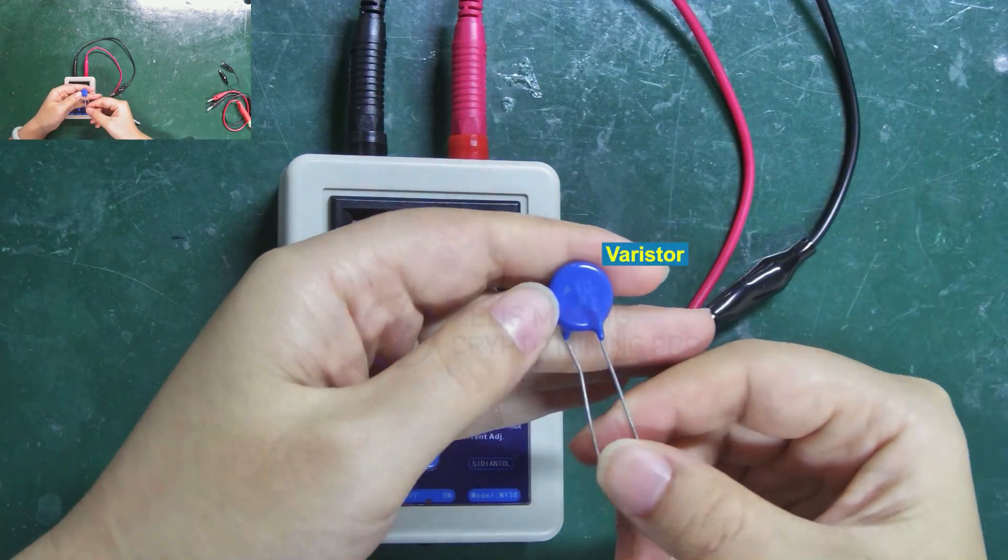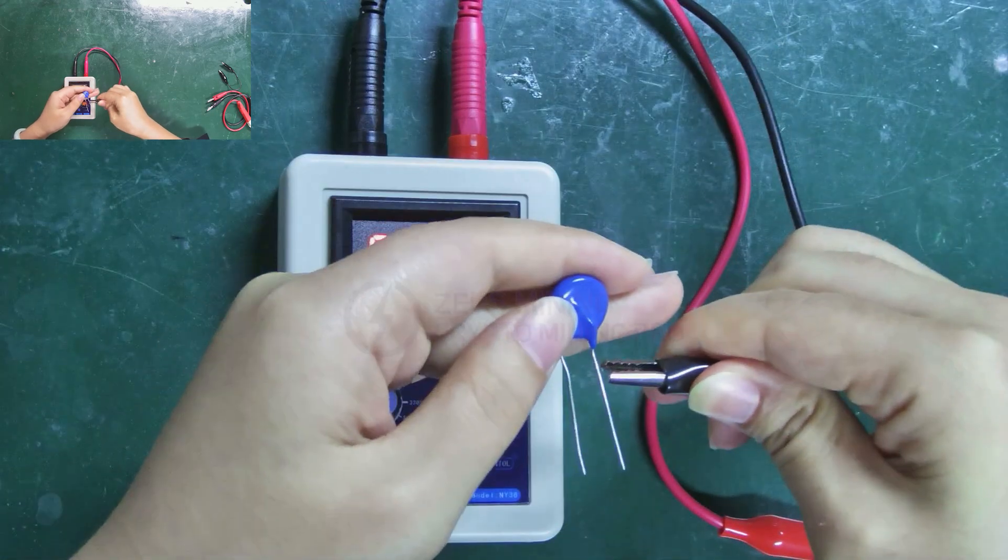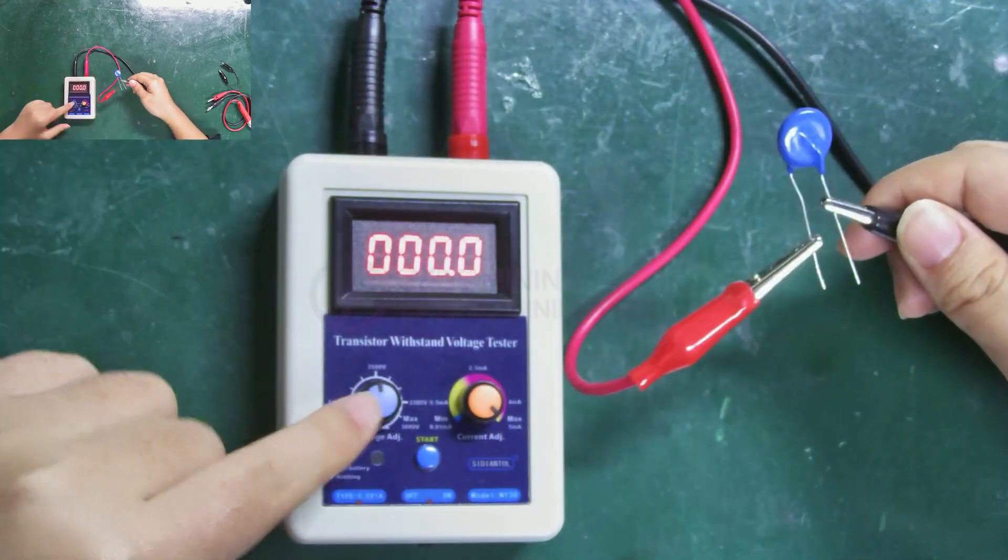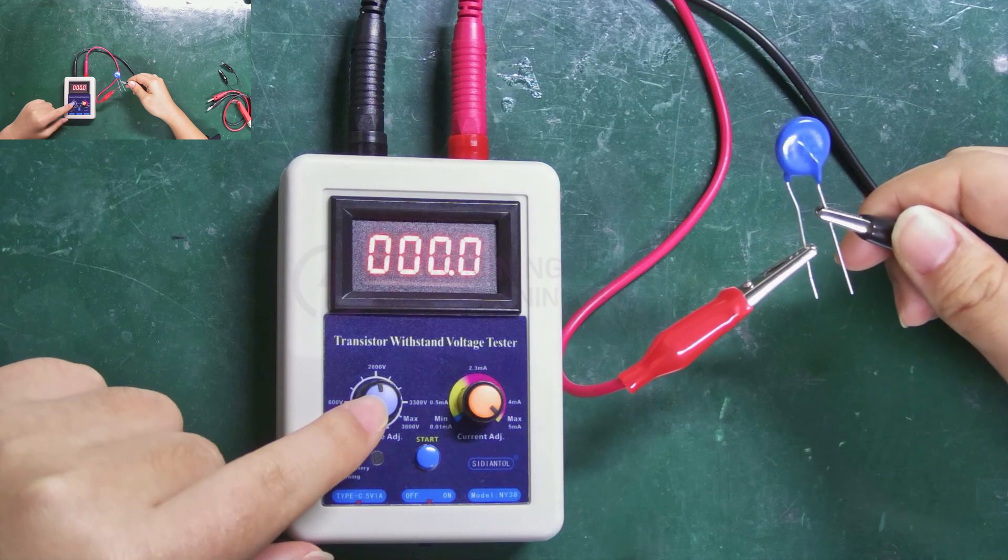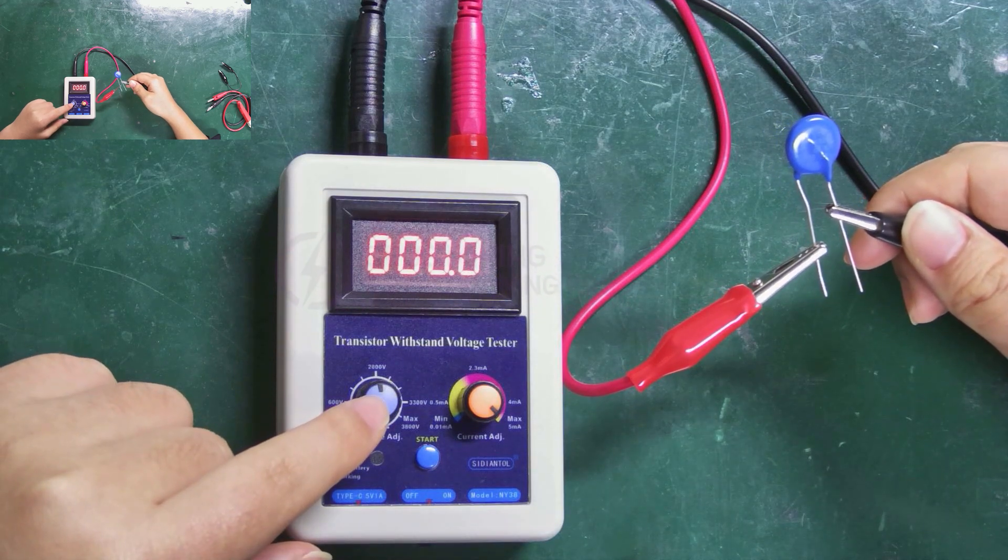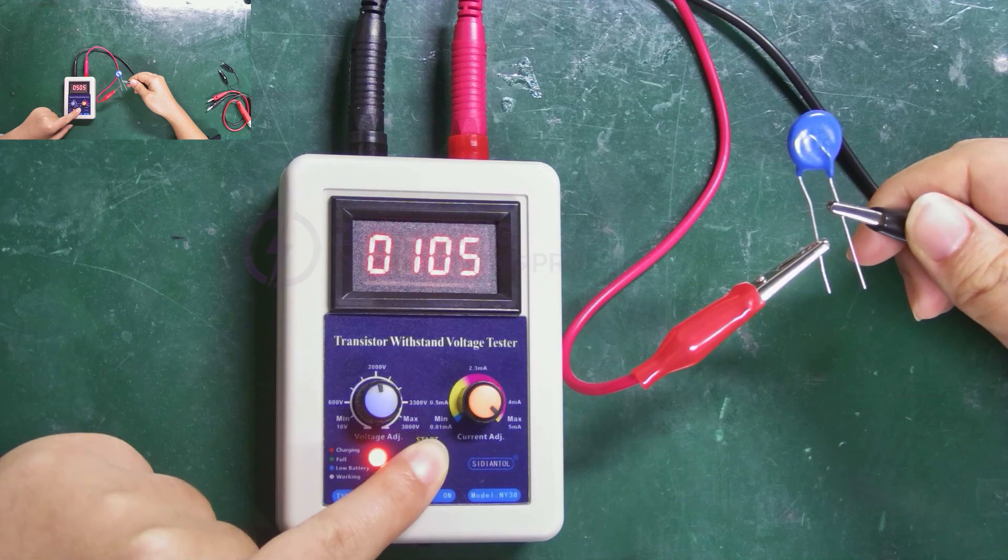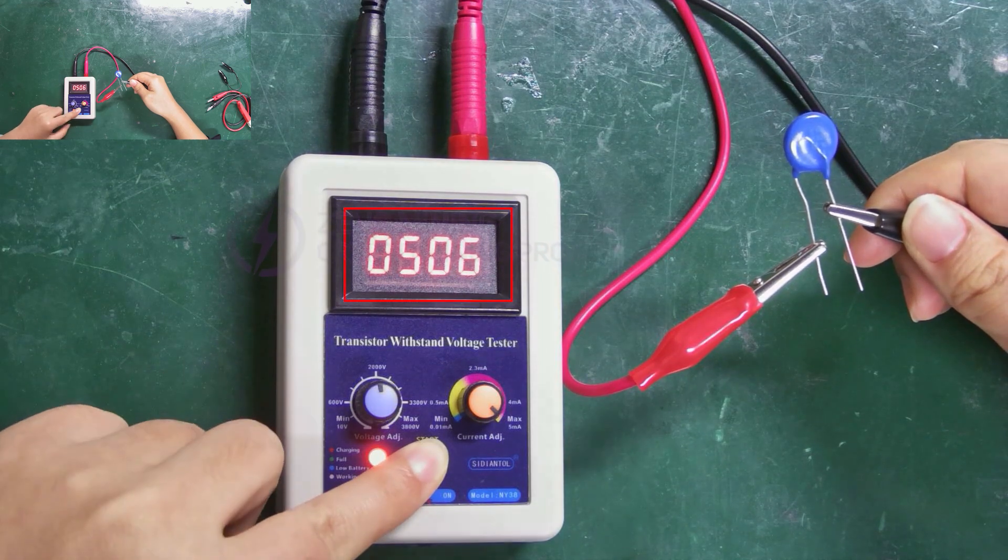This is a varistor, which doesn't require distinguishing between positive and negative poles. As mentioned earlier, if the parameters are unknown, just set the voltage a bit higher. It shows about 500 volts.